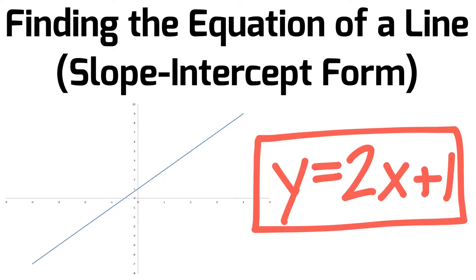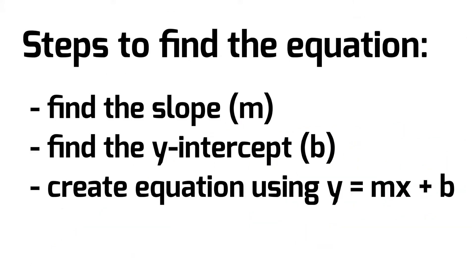This video will teach you how to find the equation of a line using the slope-intercept form. The steps are: first, find the slope which is m; second, find the y-intercept which is b; and third, create the equation using y equals mx plus b, which is the slope-intercept formula.